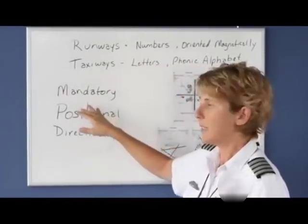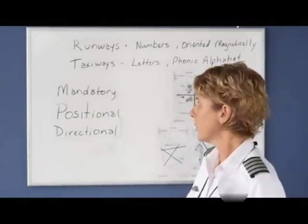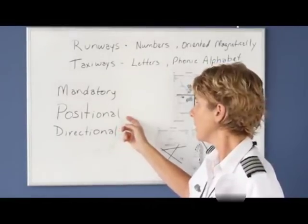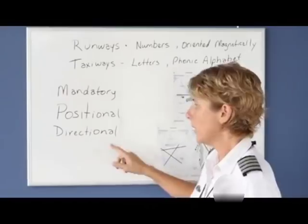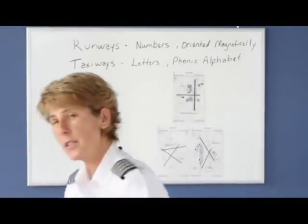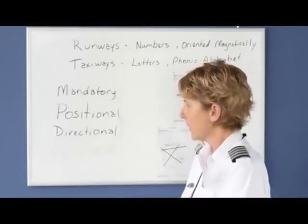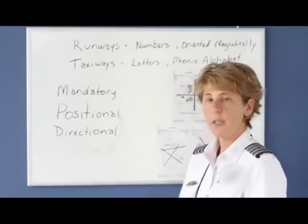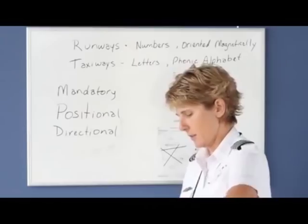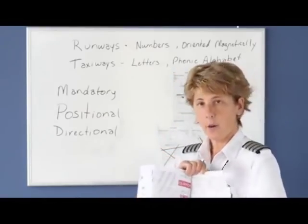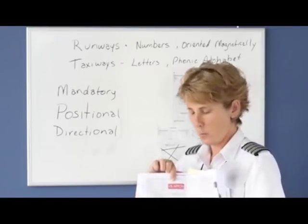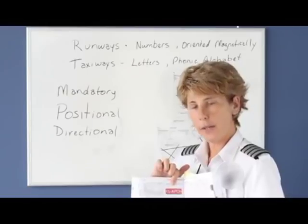The different types of signs that you will find are either going to be red background with white lettering, or black backgrounds with yellow lettering, or yellow background with black writing. These are found in the FAR for further study purposes, but a mandatory sign shows red on the sign. You would find it at the hold short, and this says that you're at the approach end of runway 15. You see how it has the red background with the white lettering?